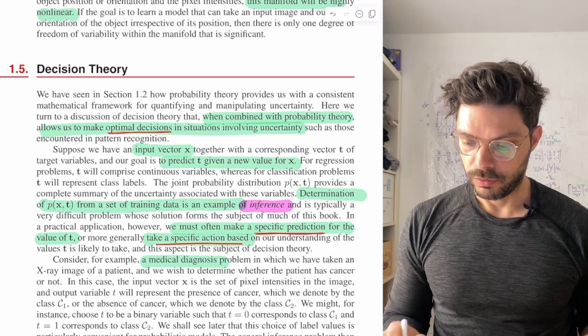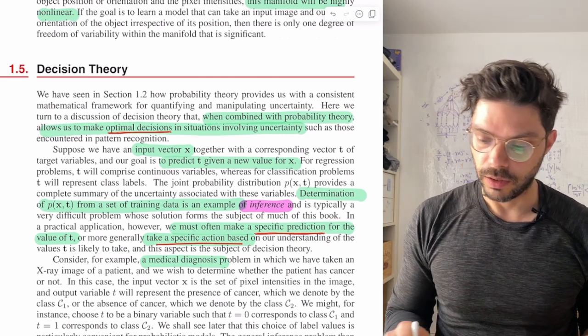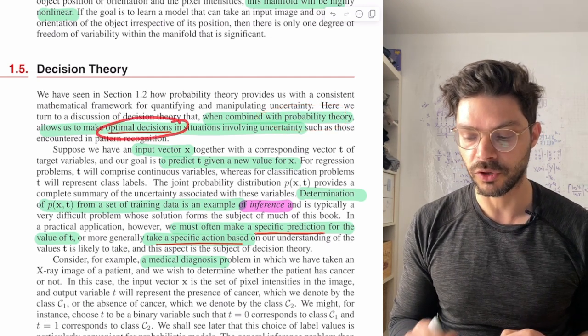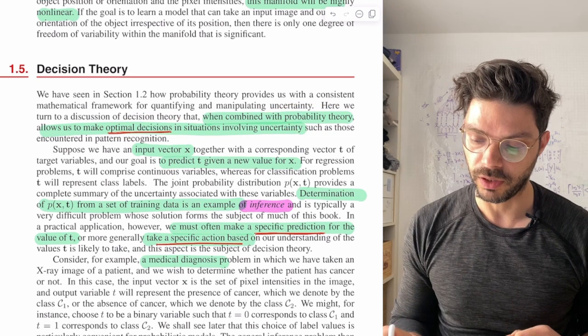Okay, so let's get started. So the idea is, as I just mentioned, when combined with probability theory, we can make optimal decisions in situations involving uncertainty.